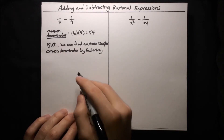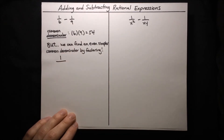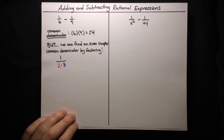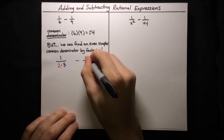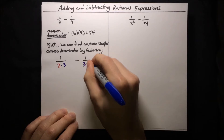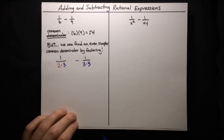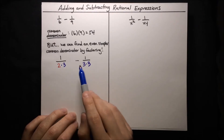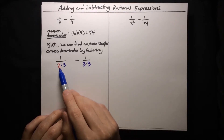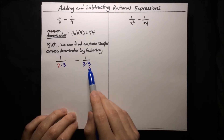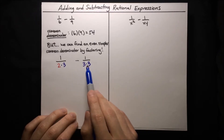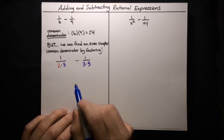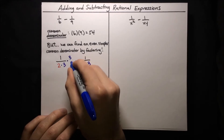Let's write these denominators as the product of their prime factors. 6 is just 2 times 3, so we'll write 2 times 3 in the denominator. And 9 is just 3 times 3, so we'll write 3 times 3 in the denominator. The way we use this factored form to find a simpler common denominator is by asking what is missing from each denominator that is in the other. What is missing from 2 times 3 that is in 3 times 3? We have a single 3 here, but there's a 3 and another 3 in the other denominator, so this denominator needs another 3. We introduce that by multiplying by 3 over 3.